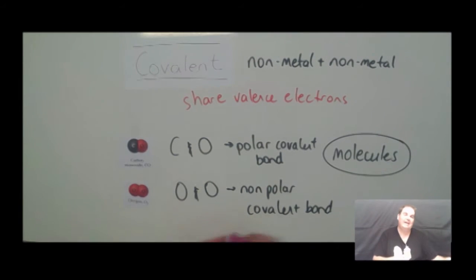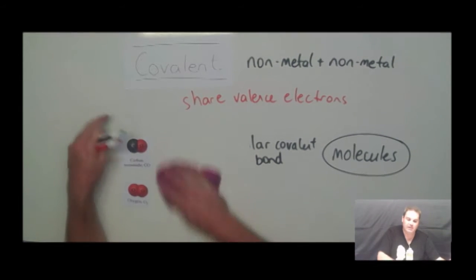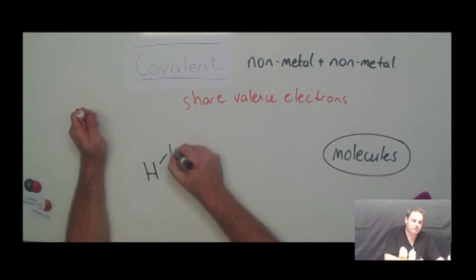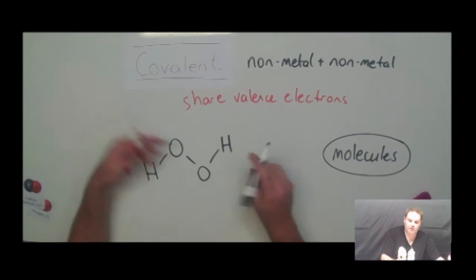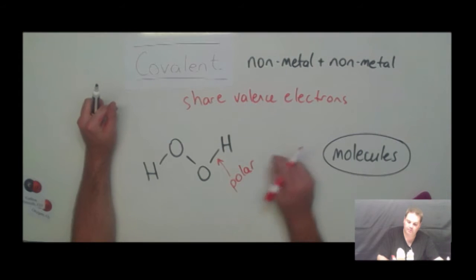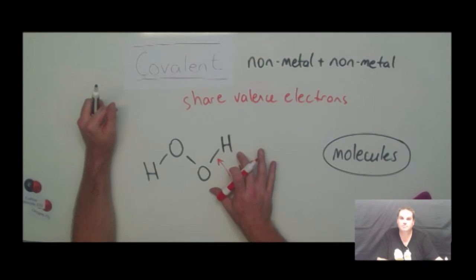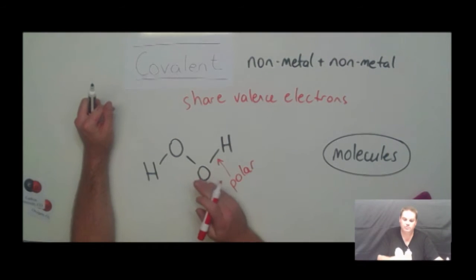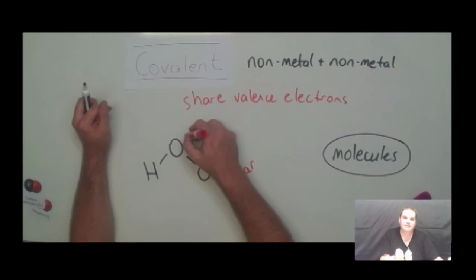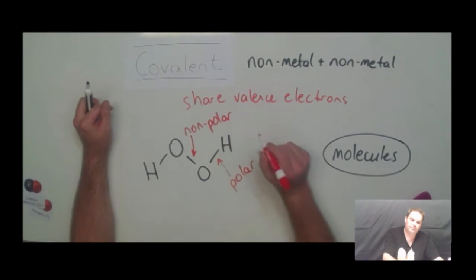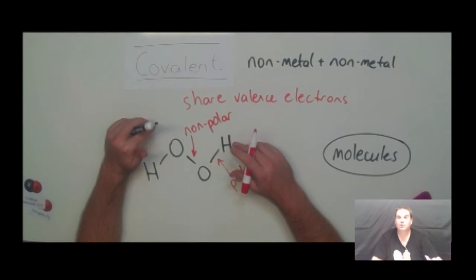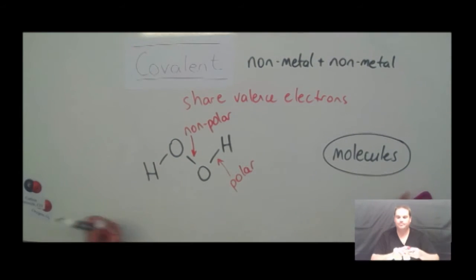It's important to note that you can have both polar and non-polar covalent bonds existing in the same molecule. For example, in hydrogen peroxide, the oxygen-hydrogen bonds are polar covalent bonds because the oxygen is more electronegative than the hydrogen and draws more of the electron density to itself. But between the two oxygen atoms, we have a non-polar covalent bond because the two oxygens share the electron density equally. So you can have both polar and non-polar bonds within a particular molecule.